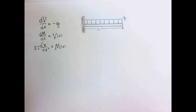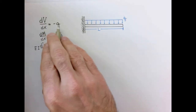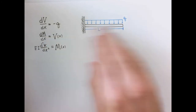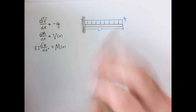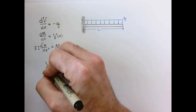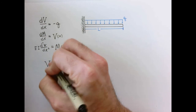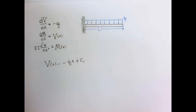Let's start with the shear equation. We have dV/dx equal to minus Q, but minus Q is a constant, so we can easily integrate the shear equation. That leaves us with one constant of integration.